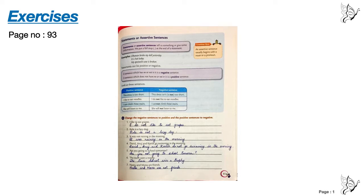Number five: Are you going to school tomorrow? Answer: Are you not going to school tomorrow? Number six: The team won a trophy. Answer: The team did not win a trophy. Remember, 'won' is past tense, that's why you are using 'did', and when you use 'did', 'won' will change to 'win'. Number seven: Nitu and Mona are friends. Answer: Nitu and Mona are not friends.